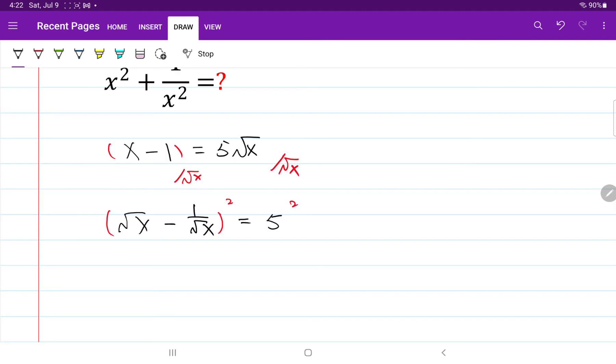So on the left-hand side, it becomes square root of x squared minus 2 square root of x multiplied by 1 over square root of x plus 1 over square root of x whole thing squared is equal to 5 squared which is equal to 25.